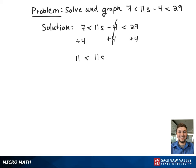This gives 11 is less than 11s is less than 33. Next, we want to get s by itself, so we're going to divide all sides by 11.